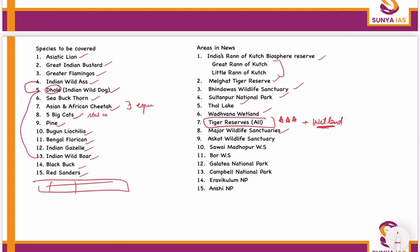Then do Major Wildlife Sanctuaries with special focus on the biome and the species found there. Specifically cover Swag Madhupur Wildlife Sanctuary, Bore Wildlife Sanctuary, Galathia National Park, Campbell National Park, Kheravigulam National Park, and Anshi National Park.